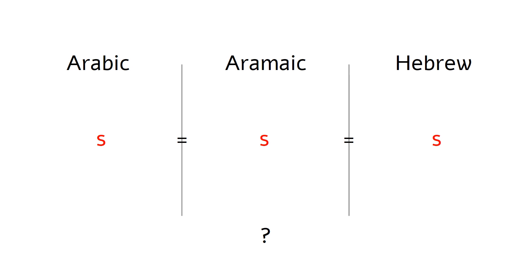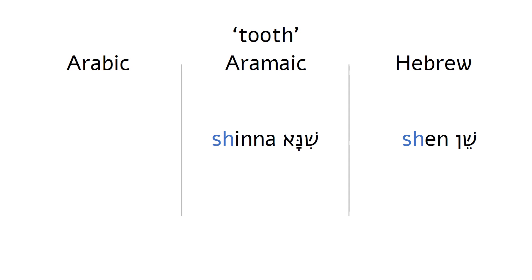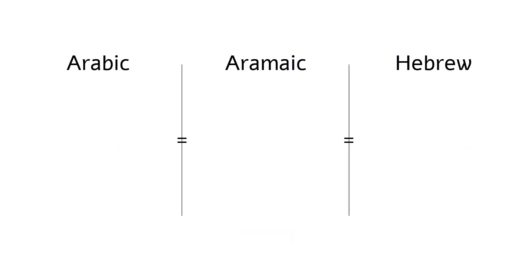It's a little bit more complicated than that. Let's look at the word for tooth. In Hebrew and in Aramaic, it has a SH sound. But Arabic has the same sound as before: S. So actually, what we need to do here is to assume that Arabic S comes from two different origins — one that is equivalent to the Aramaic and Hebrew S, and another that is equivalent to the Aramaic and Hebrew SH.